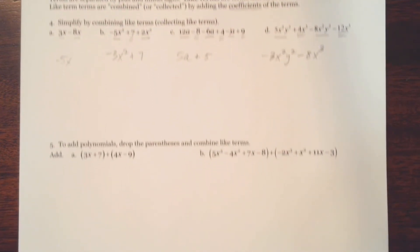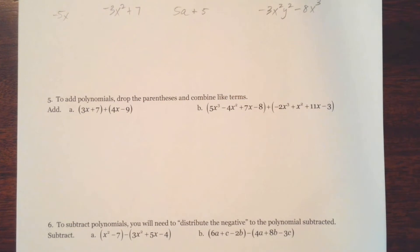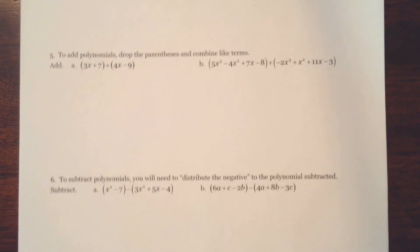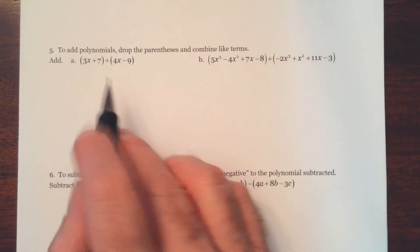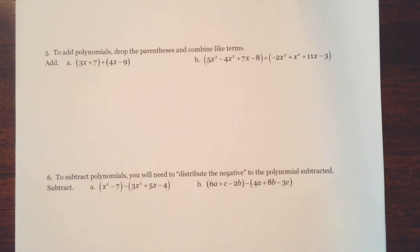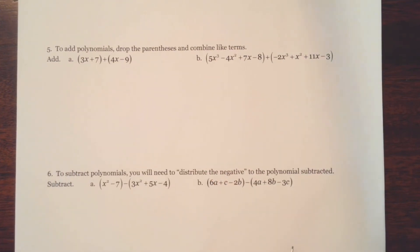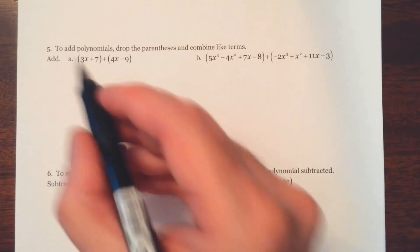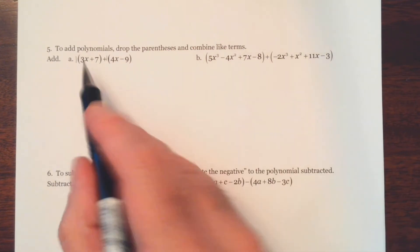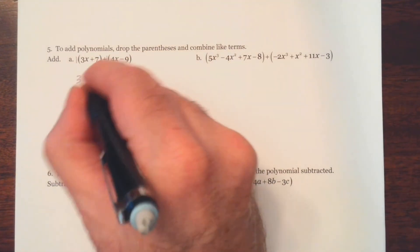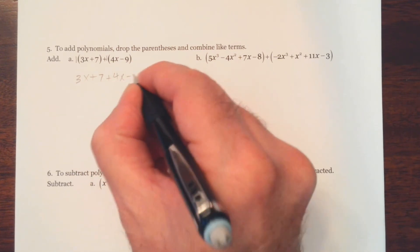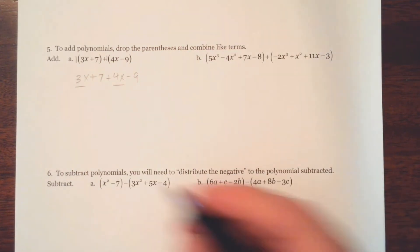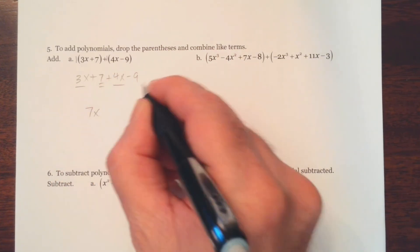Alright, number 5. Notice it says to add polynomials, drop the parentheses and combine the like terms. We've done this before. We just never really thought of them as polynomials. And we tended to do stuff like this, some smaller polynomials. Here we have a binomial plus a binomial, which we've seen before. So, notice what it says, drop the parentheses. Well, this is a 1. It's understood to be a 1 and so is this. And 1 times anything is itself. So again, we don't really need the parentheses with addition of polynomials. And then we'll add our like terms just like we did up above. So we'll get 7x minus 2.